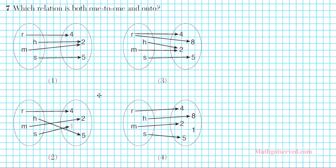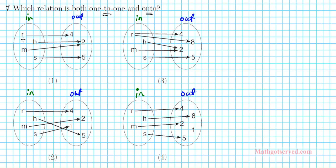Let's take a look at question number 7. It says which relation is both 1-to-1 and onto. 1-to-1 basically means that for every element you have in an output, you have exactly one input pointing to that. The set on the right is my output. It's just like a function — the input represents your independent variable and your output represents your dependent variable. So in order for it to be 1-to-1, every input must point to exactly one output. You can't have one input pointing to two outputs.